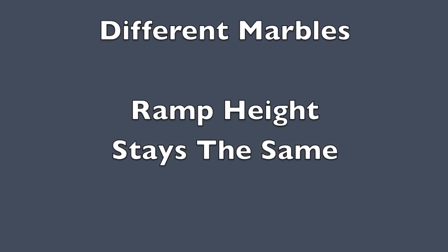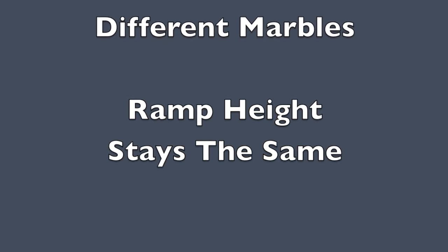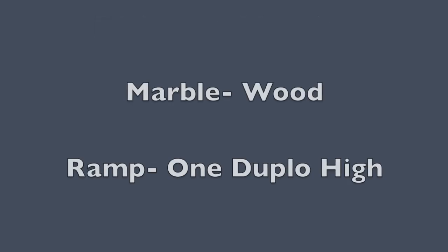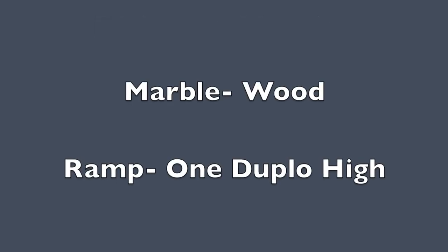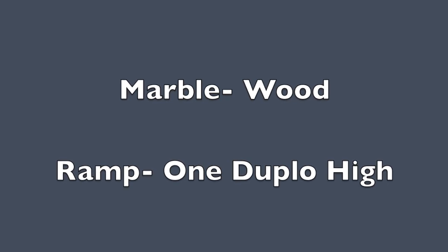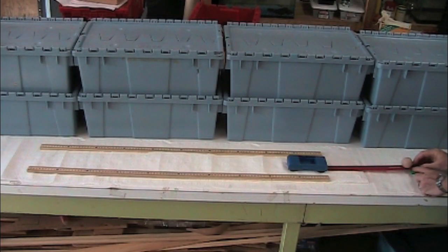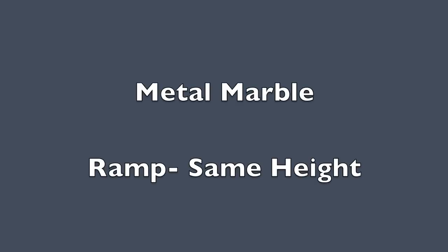The ramp height stays the same. Here we have the wood marble — the ramp is one Duplo high. Now we will look at the metal marble — the ramp is the same height.